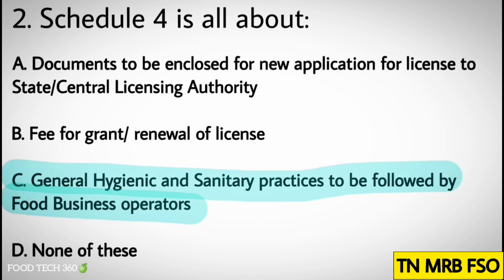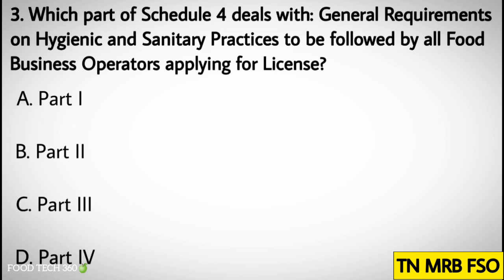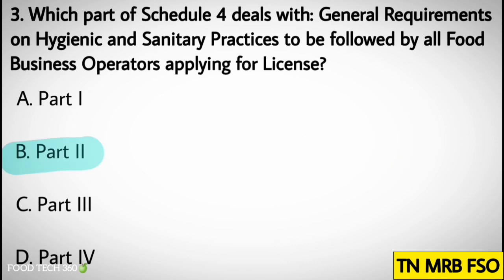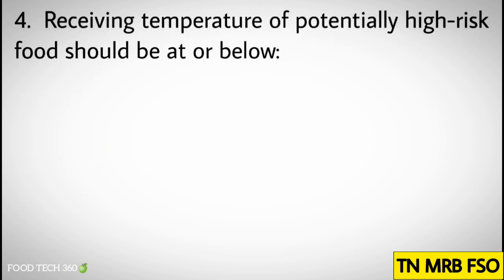Correct answer: C) General hygienic and sanitary practices to be followed by food business operators. Question number three: Which part of Schedule four deals with general requirements on hygienic and sanitary practices to be followed by all food business operators applying for license? Options: A) Part one, B) Part two, C) Part three, D) Part four. Correct answer: B) Part two.